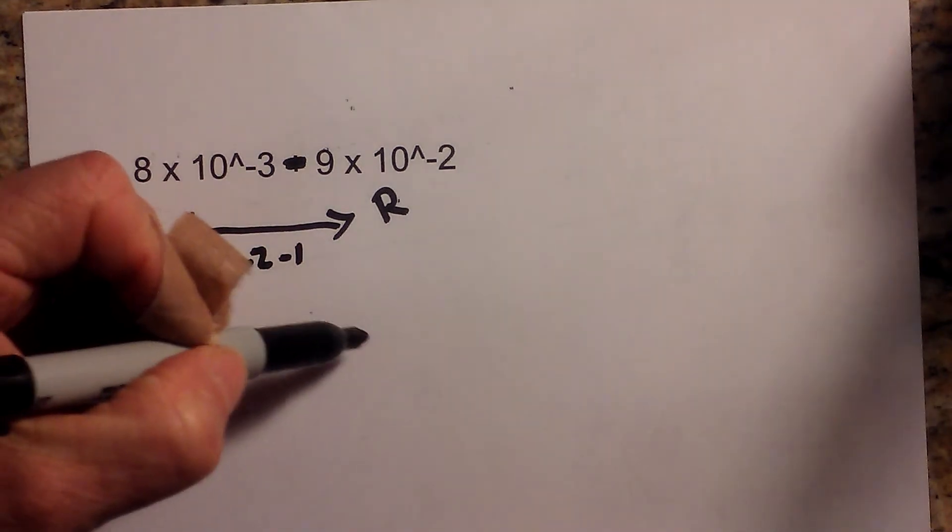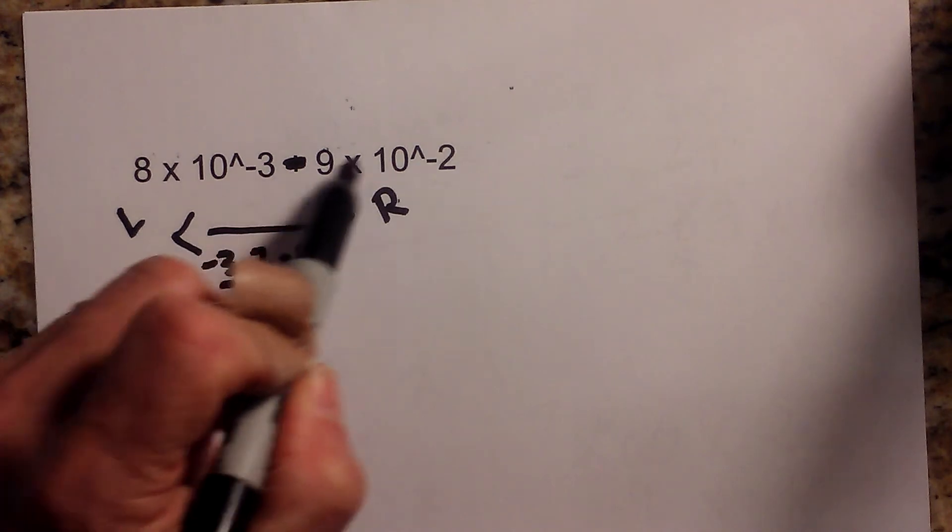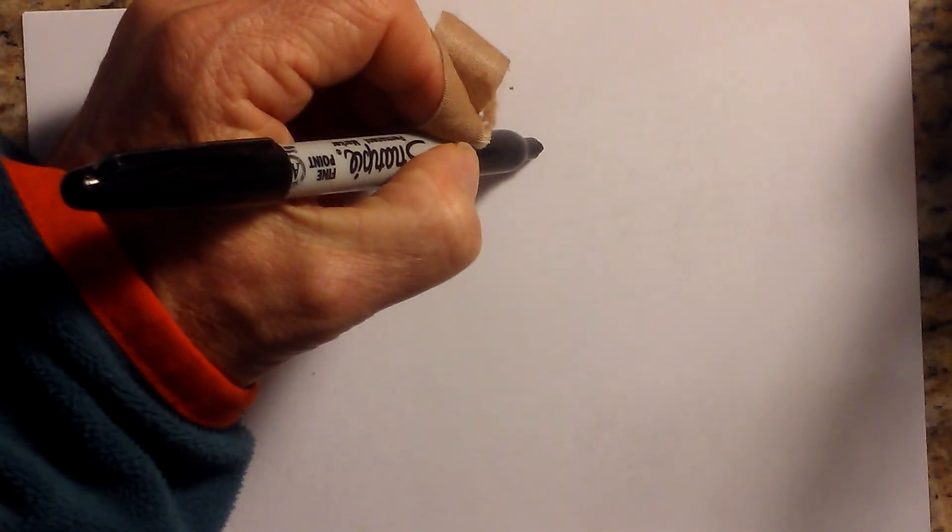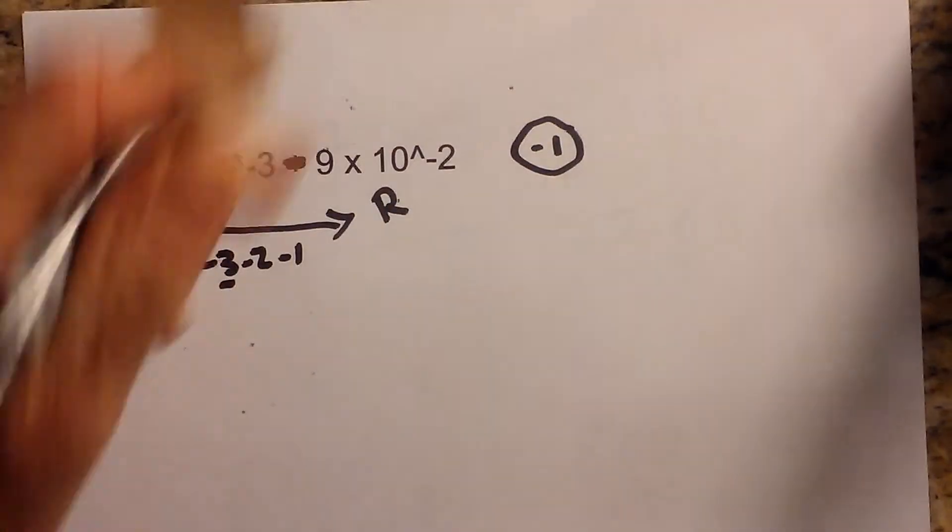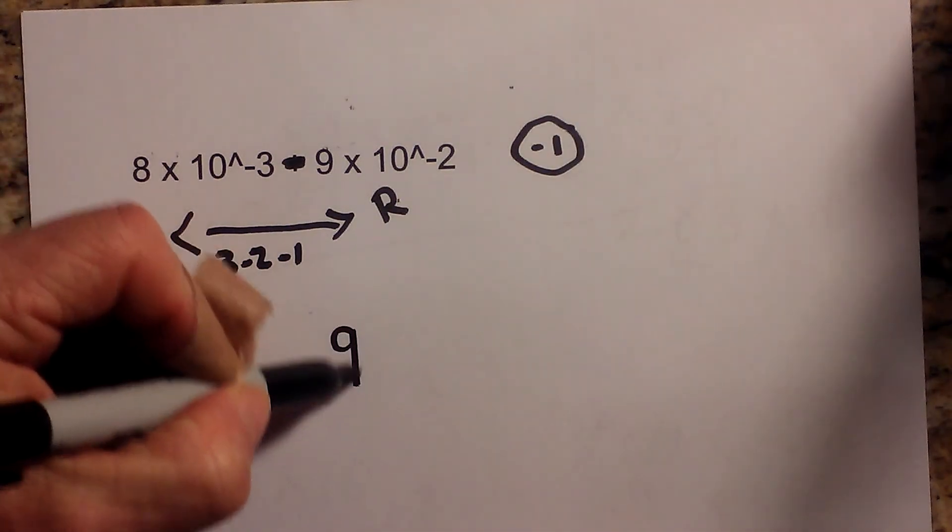So I'm going to rewrite this. I will take negative 3 minus negative 2, so that is negative 1. So I need to move the decimal 1 place. So now I will rewrite this.